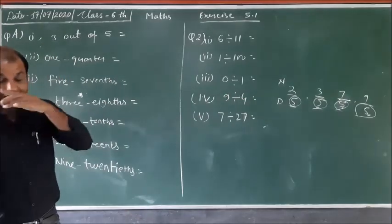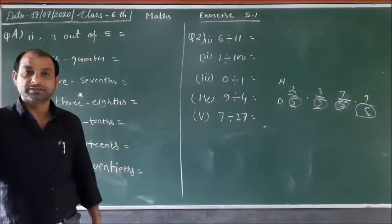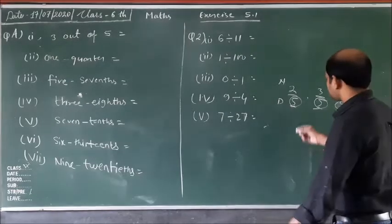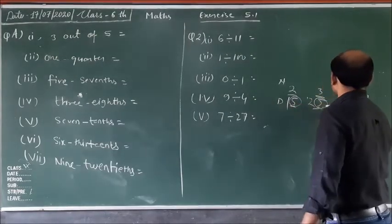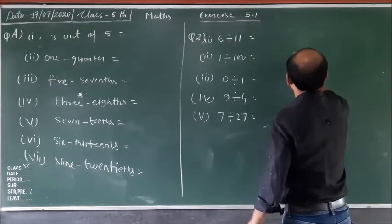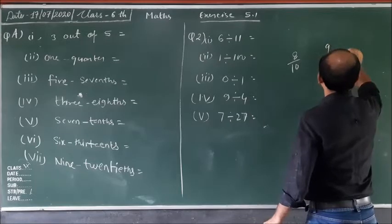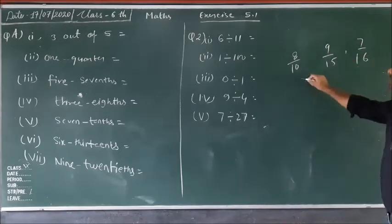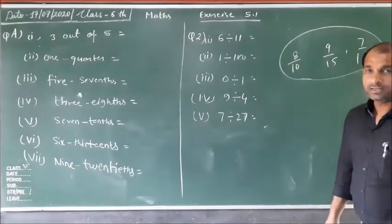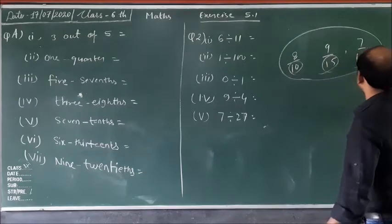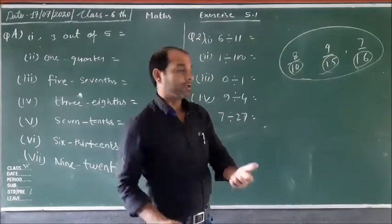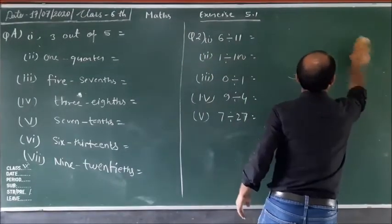Fractions having different denominators are called unlike fractions. For example: 8 upon 10, 9 upon 15, 7 upon 16. These fractions are unlike fractions because all these denominators are different. So these are unlike fractions.